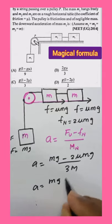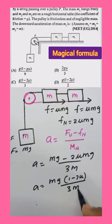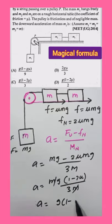So acceleration is equal to MG. If you common out then you'll be getting one minus two mu by three M. So you're getting an answer like this. So A is equal to G into one minus two mu by three. That's it.